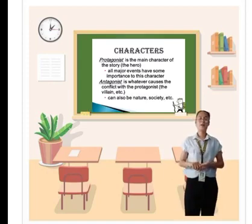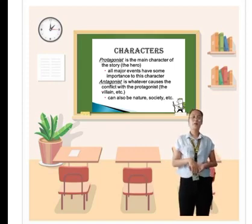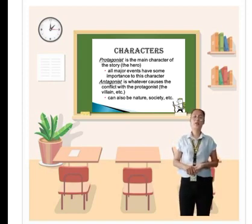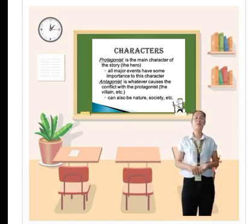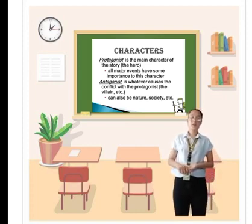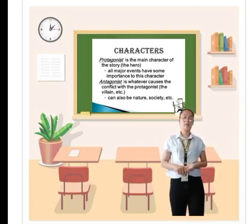The next one of the part of the elements of the story is characters. Protagonist is the main character of the story or the hero. All major events have some importance to the character. Antagonist is whatever causes the conflict with the protagonist, can also be nature, society, at iba pa.